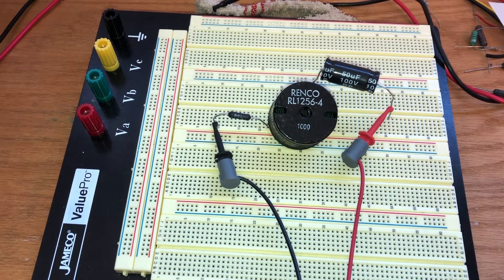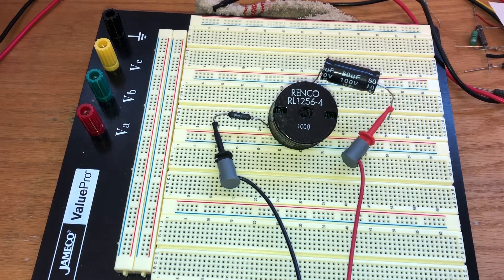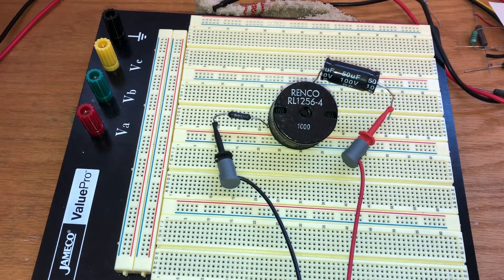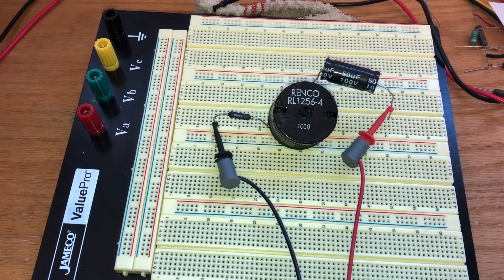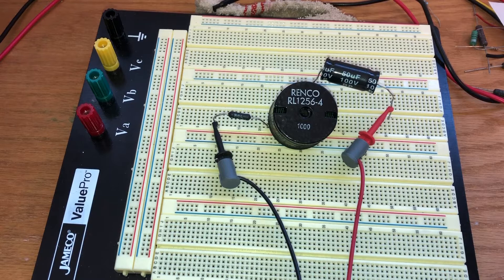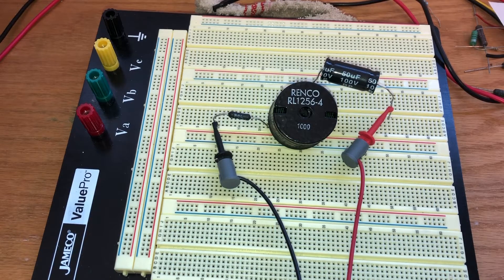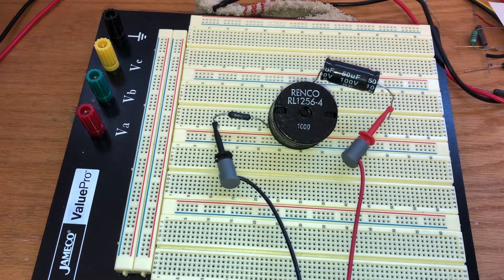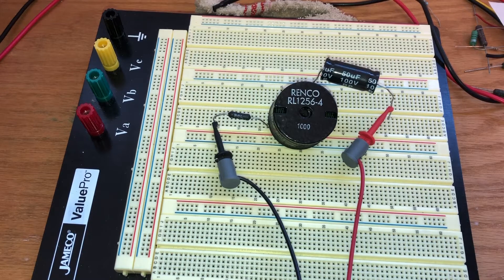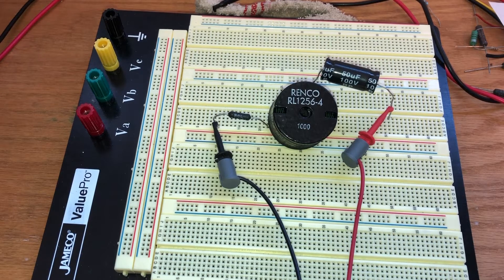In lab today, we're going to look at the resonance in a series RLC circuit. In previous activities, we've measured the capacitance of this capacitor. It's labeled 50 microfarads, but we've measured it to be 56.3 microfarads.